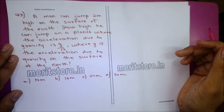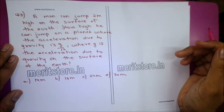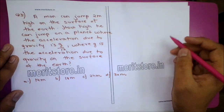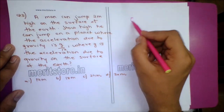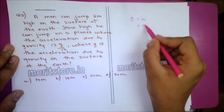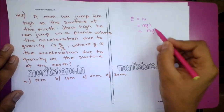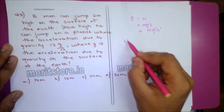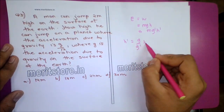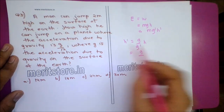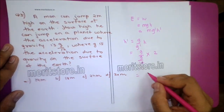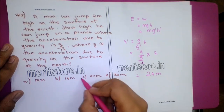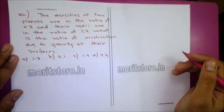Question 3: A man can jump 2m high on the surface of the Earth. How high can he jump on a planet where the acceleration due to gravity is g/12? The energy required to jump height H is E = W = mgH = mg'H'. So H' = (g/g')H = (g/(g/12)) × 2 = 12 × 2 = 24 meters. Option C, 24 meters, is the correct answer.